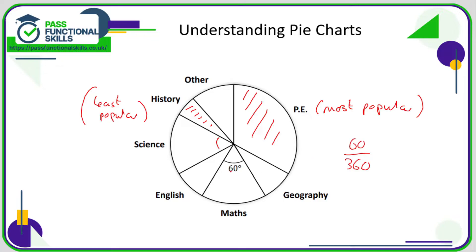So out of the full 360, 60 degrees correspond to maths, and we can simplify this fraction. What we can say is that 60/360 of the school population chose maths as their favorite subject, but that's not a great fraction because we've got a very high bottom number. But we can simplify this fraction. First of all, if we chop off the zeros, we can take that down to 6/36.